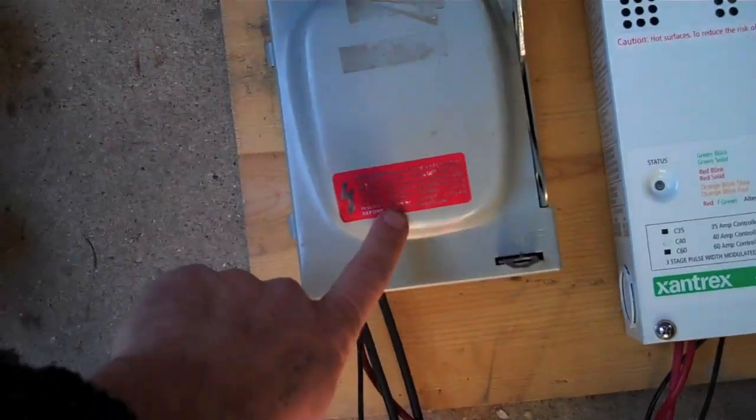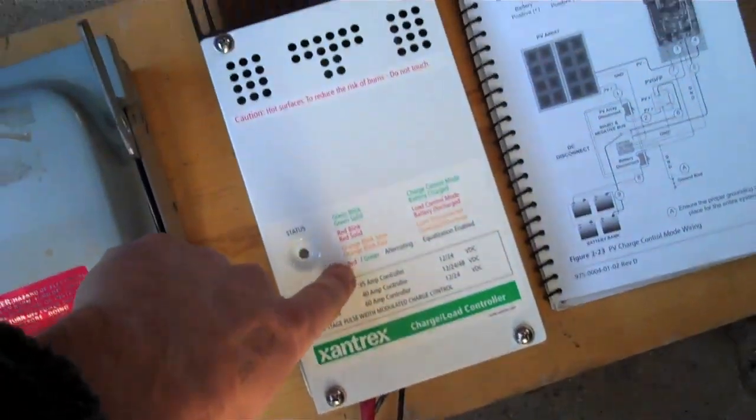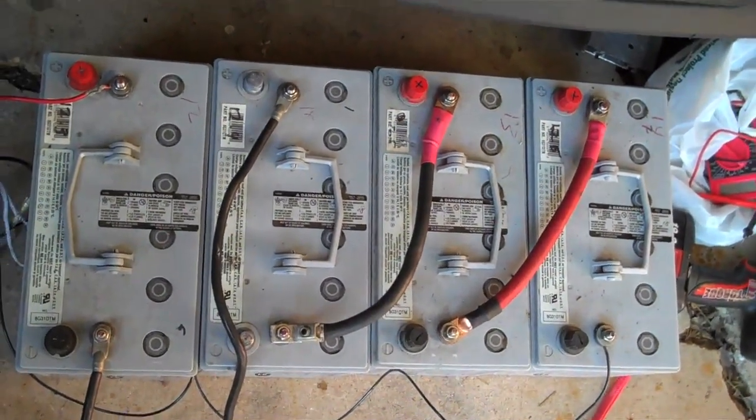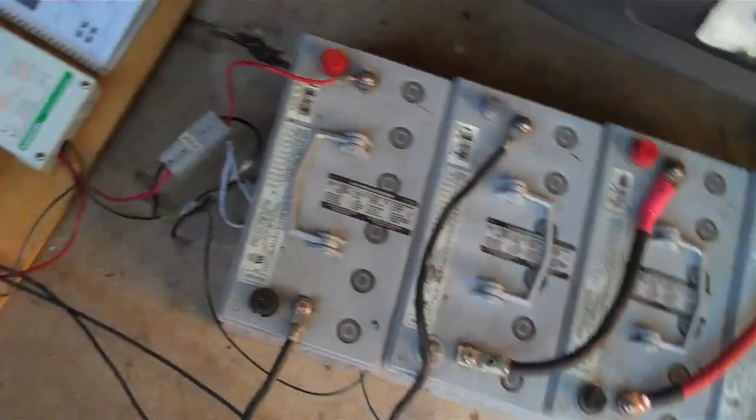So the power comes from the disconnect over into here, and then also from here to the batteries. And then I have the batteries just rigged up on a basic little manual disconnect right now.